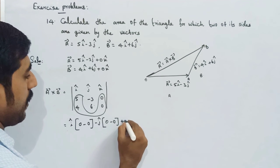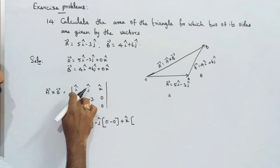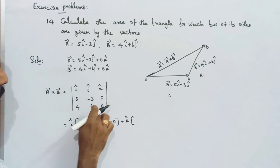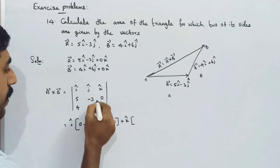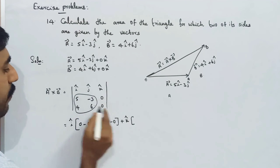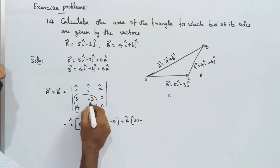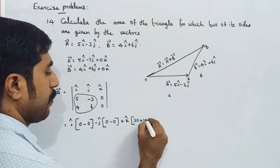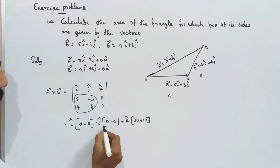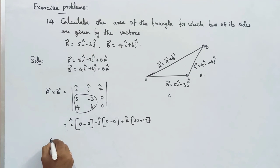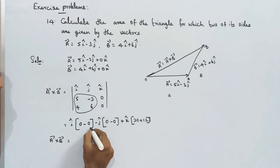For the k-cap term, we take the related row and column, cancel it, and do cross multiplication: 5 into 6, minus 4 into minus 3, which gives 30 plus 12 equals 42. So the i-cap and j-cap components are 0, and the k-cap component is 42.